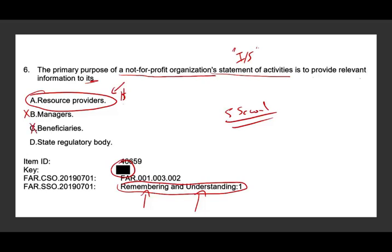State regulatory bodies might look at this information or may require other information, but not the statement of activities. The statement of activities goes to the people that give us money. Why? Because the people that give money to a non-profit want to know how we're spending the money — how much is being spent on administrative, how much is being spent on actually helping people, how much on maintenance, and so forth. So the answer is A.